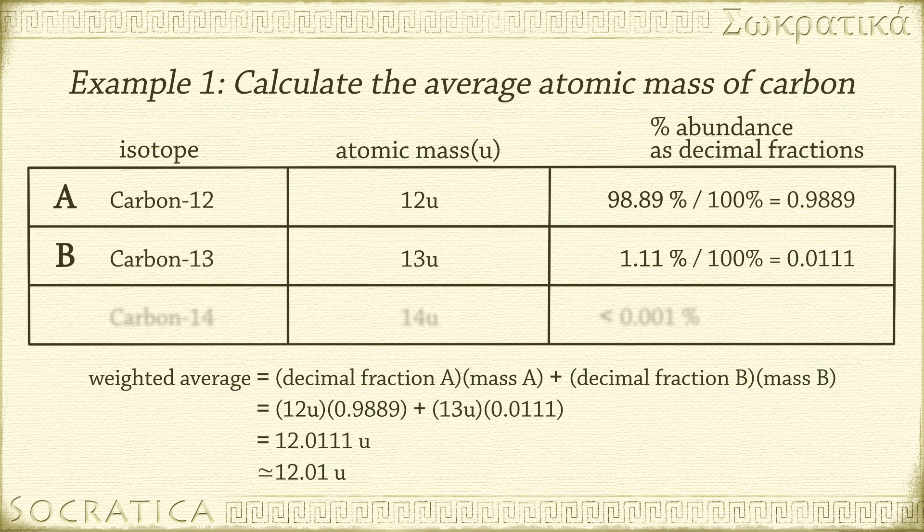Remember, most of the carbon on Earth is carbon-12, and only a little bit of it is carbon-13, so the weighted average should be really close to the atomic mass of carbon-12. And it is, just a tiny bit more than 12u, due to the little bit of carbon-13 which is heavier.